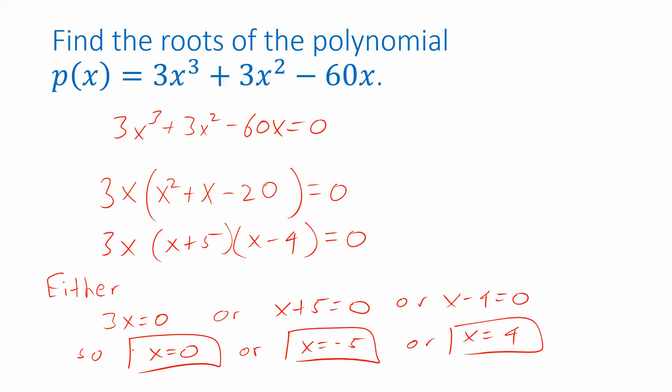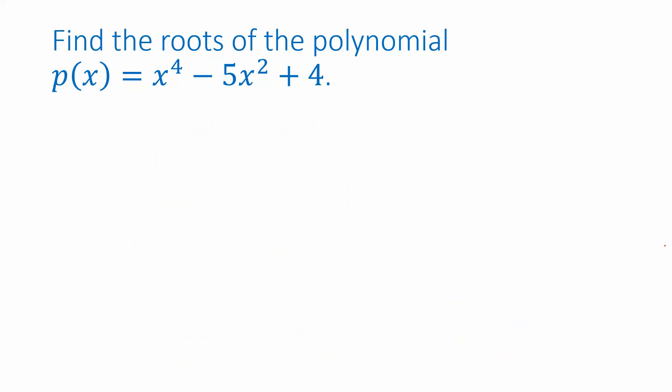So it was cubic, but we were able to attack it using the same sort of ideas from the previous examples. This last example is going to throw a new twist at us. This time, I have a quartic. And I want to solve the equation x to the fourth minus 5x squared plus 4 equals zero in order to find the roots of this polynomial. And I can't factor anything out like I did before. I can't factor an x out because the first two terms have a power of x, but the constant term doesn't. There's no x here. So I can't pull an x out.